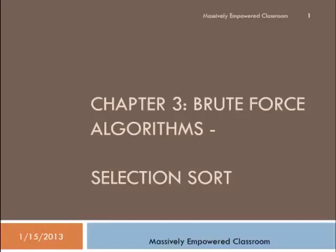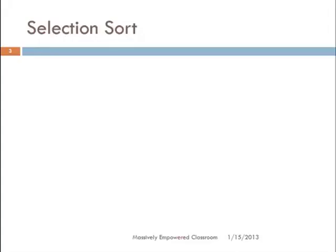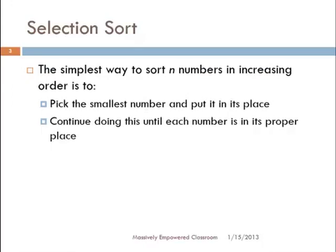The idea behind selection sort is rather simple — it is perhaps the simplest algorithm for sorting. The idea is: find the smallest number and put it in its right place. If we keep doing this until all the elements are sorted, each number will be in its proper place. We take the elements which are not yet sorted, find the minimum of them, and put it in its correct place.